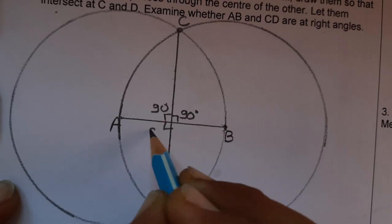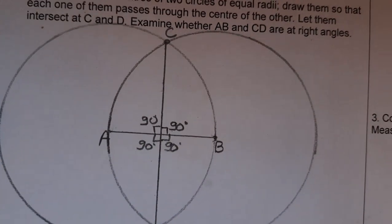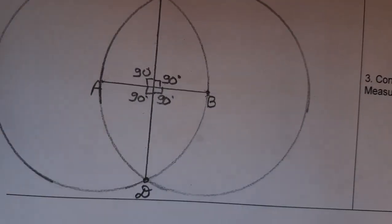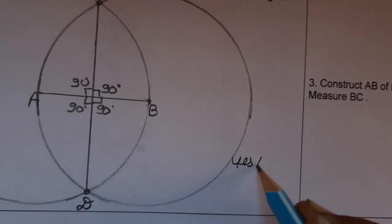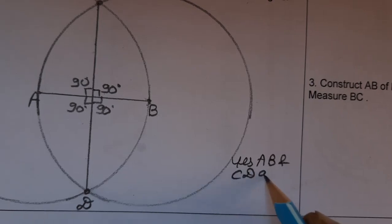AB and CD both intersect at 90 degrees. AB and CD are perpendicular to each other. Yes, we can write yes, AB and CD are at right angles.